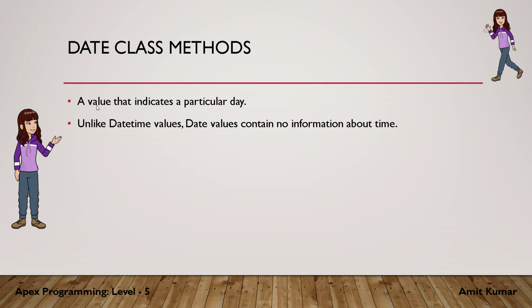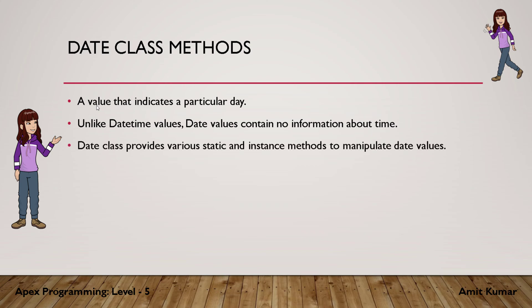A Date class is used to represent a value that indicates a particular day. Unlike DateTime values, Date values contain no information about time. So DateTime values have both date and time, but Date values only contain date and do not contain any information about time. The Date class provides various static and instance methods to manipulate date values.